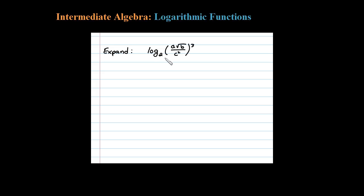Here we're asked to expand this logarithm. Let's first notice this exponent here and use the property that says we can write that exponent as a coefficient. So 3 times this logarithm log base 2 of a times the square root of b all over c squared.